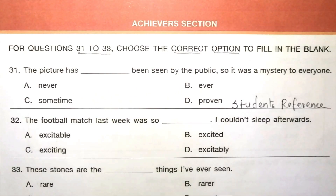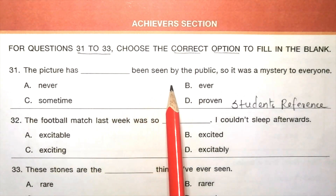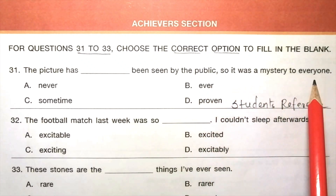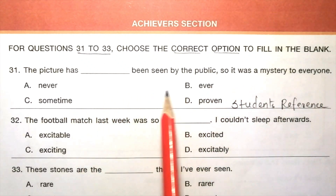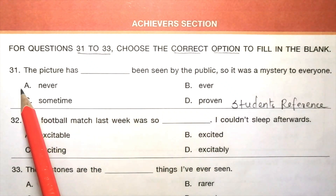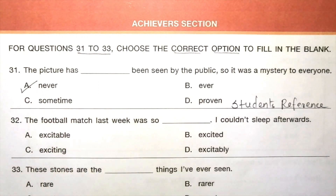Next topic is the Achievers section. For questions 31 to 33, choose the correct option to fill in the blank. Question 31: 'The picture has dash been seen by the public, so it was a mystery to everyone.' Options: never, ever, sometime, proven. The answer is A, never. 'The picture has never been seen by the public, so it was a mystery to everyone.'